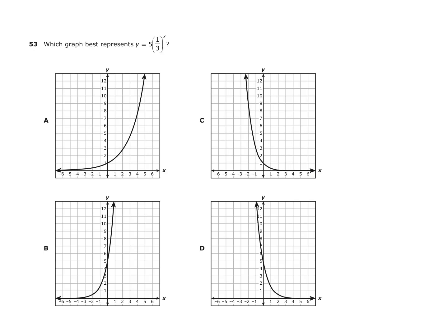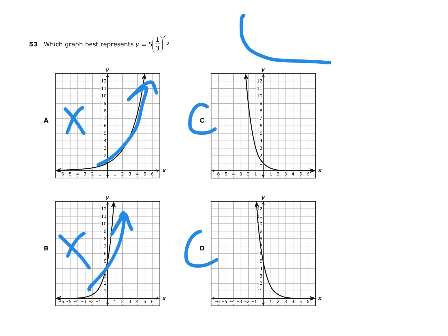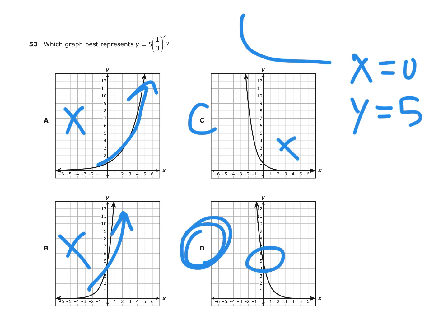Number 53: Which graph best represents y equals 5 times (1/3) to the x power? Since 1/3 is less than 1, it's a decreasing exponential, so it should look like it goes down — that eliminates A and B, which are increasing. Between C and D, we find the y-intercept: when x is 0, (1/3) to the 0 is 1, and 1 times 5 is 5. So the y-intercept should be at 5. The answer is D. You can graph this on your calculator and verify the y-intercept.